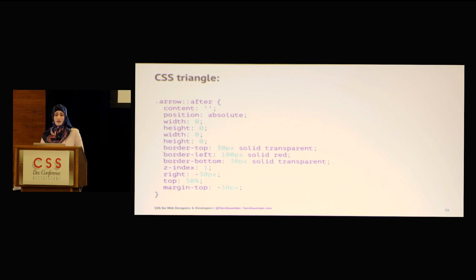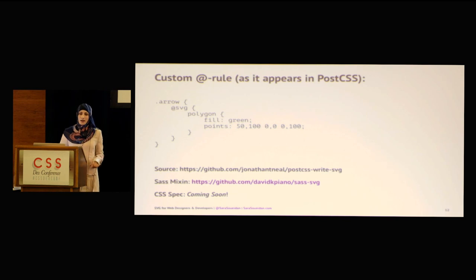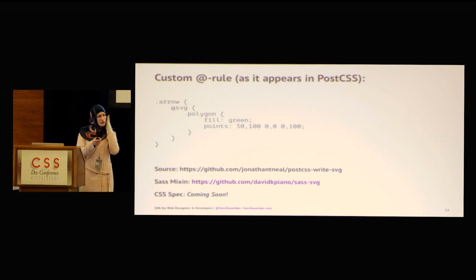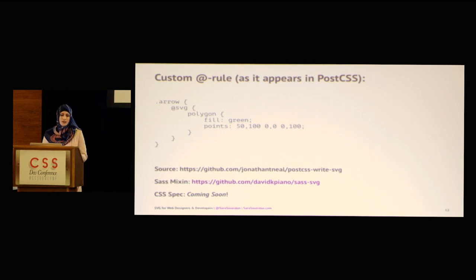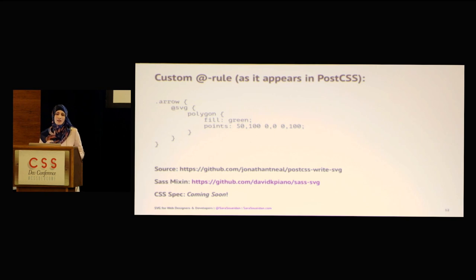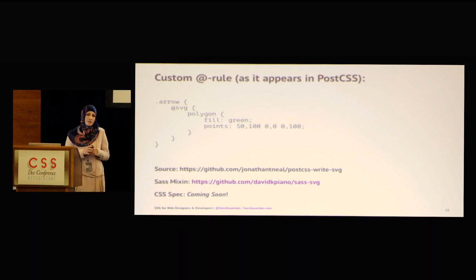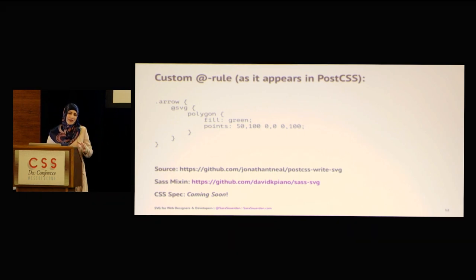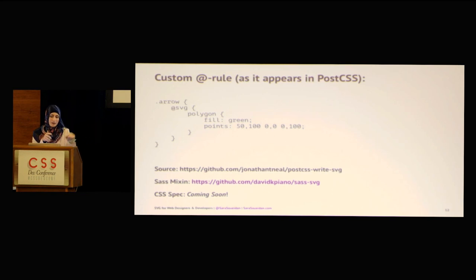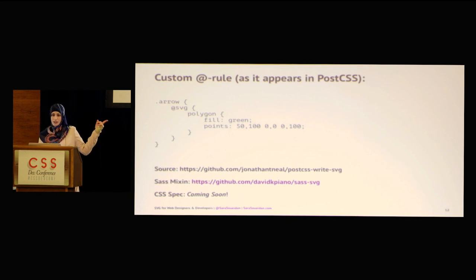This excuse will no longer be valid in the future because Tab Atkins introduced a new specification which defines custom add rules. The idea is to have a custom add SVG rule which will enable us to create simple SVG shapes inside of CSS. With great power comes great responsibility, so when this happens, don't create complex SVGs in your CSS — keep the separation of concerns and only use it sparingly, for examples like that little triangle. This add SVG rule is currently part of a PostCSS plugin, so you can experiment with it today. There's also a Sass mixin that enables you to create simple effects in CSS and Sass today.